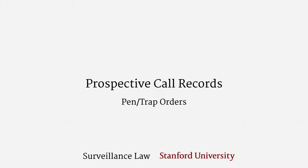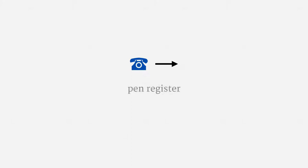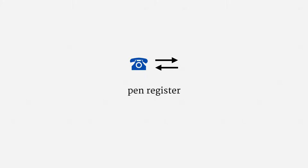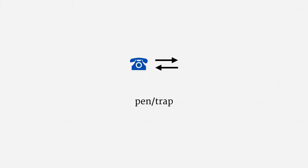Let me start by clarifying some terminology. The technology used to collect information about outgoing calls is usually referred to as a pen register, sometimes also called a dialed number recorder, or DNR. The technology used to collect information about incoming calls has a different name — it's a trap-and-trace device. When police seek prospective call records, they usually want both outgoing and incoming calls — both a pen register and a trap-and-trace device — it's usually just called a pen trap for short.